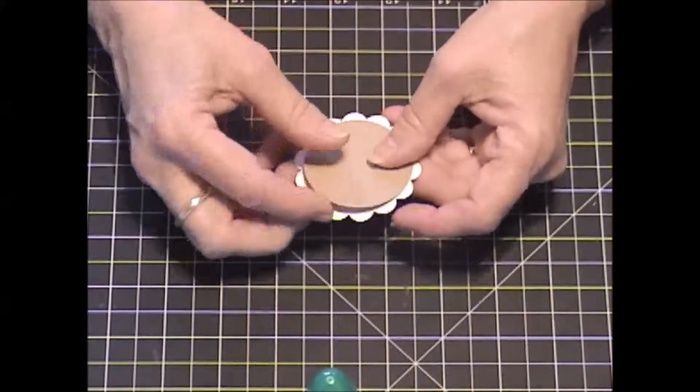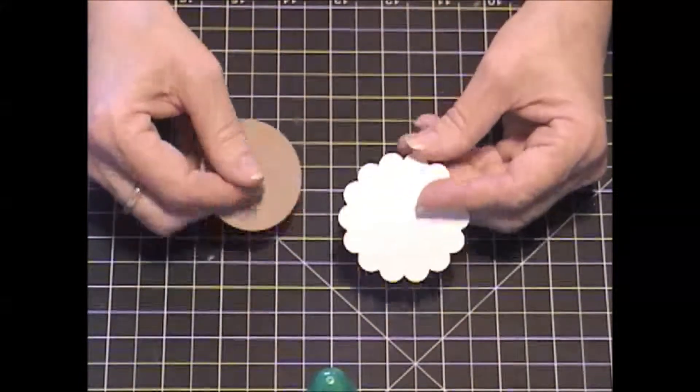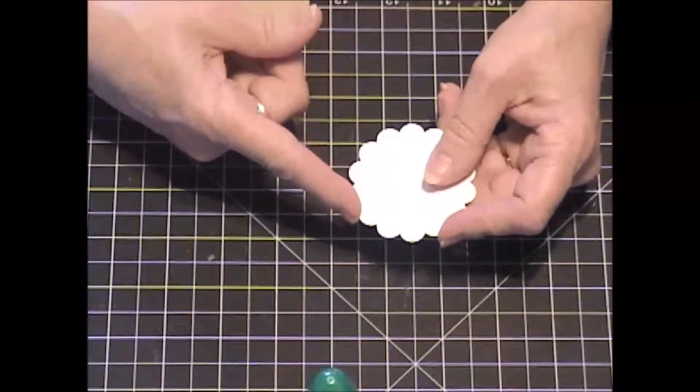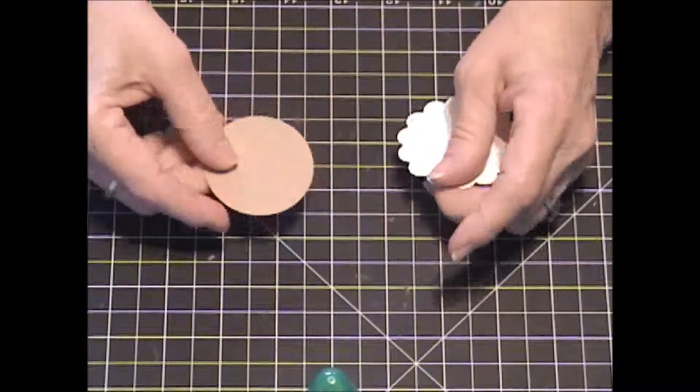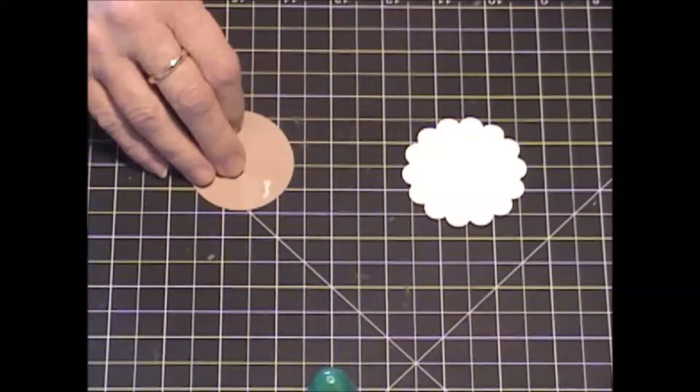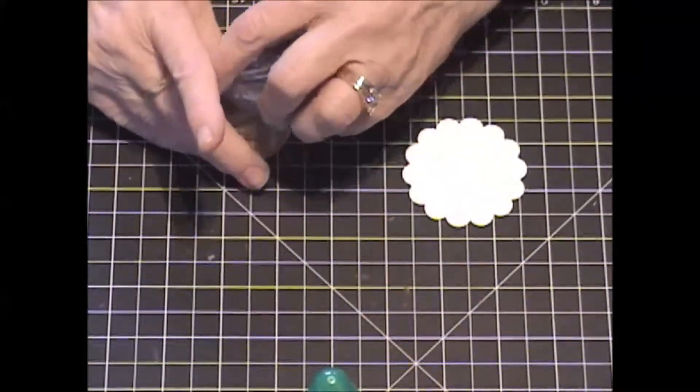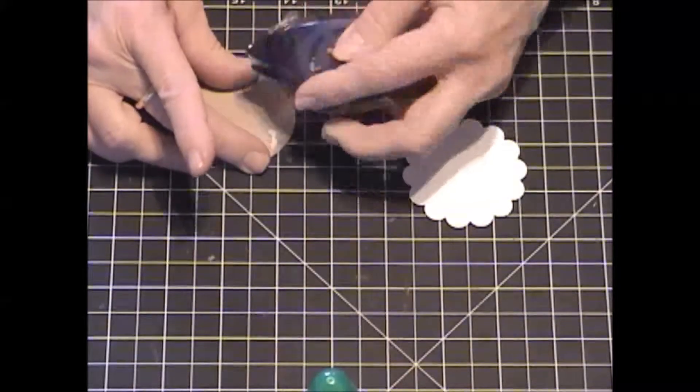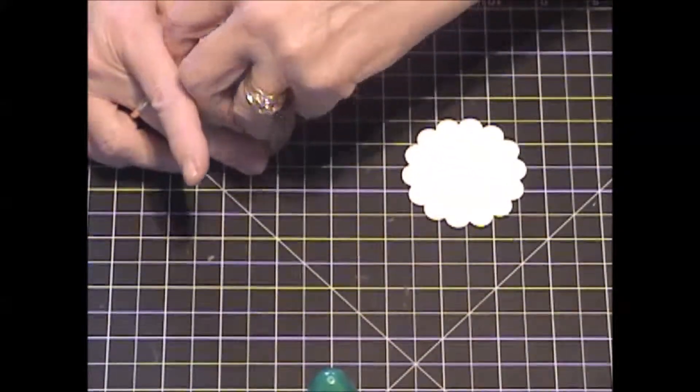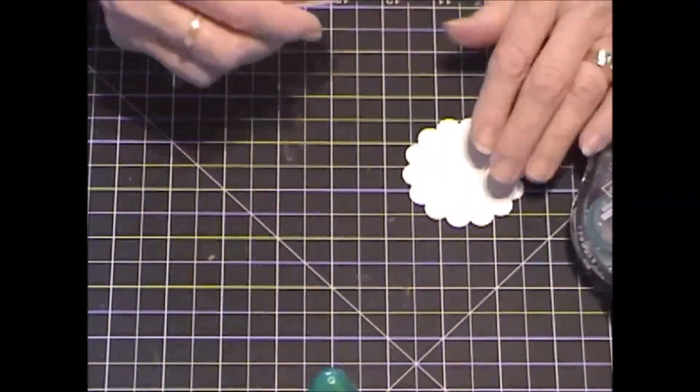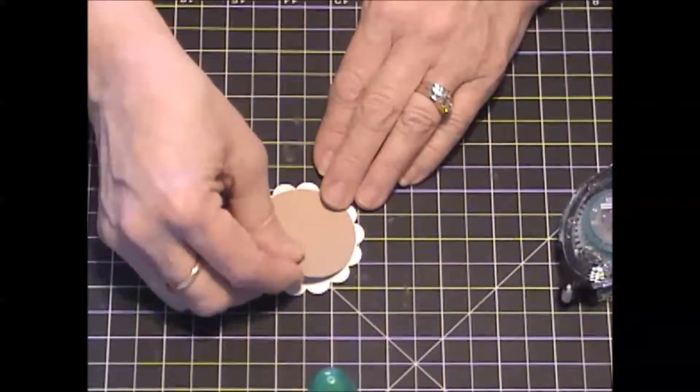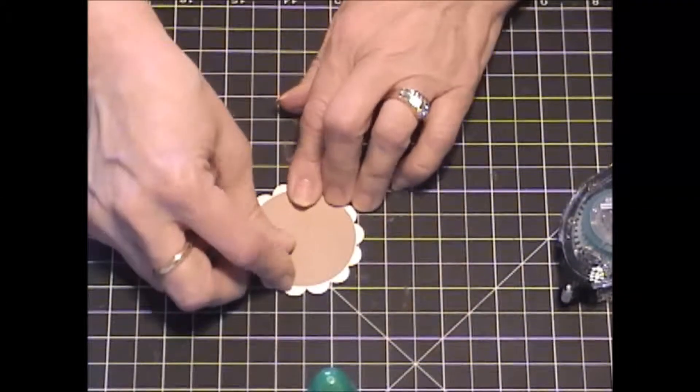I'm just going to set that aside for a minute. And we're going to use, I've already pre-punched these. This is a two and three-eighths inch scallop punch and this is our two-inch circle punch. And we're going to use a little snail.